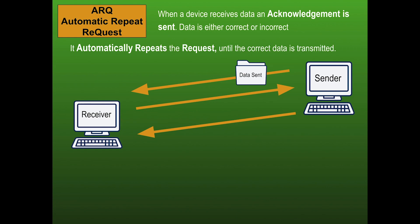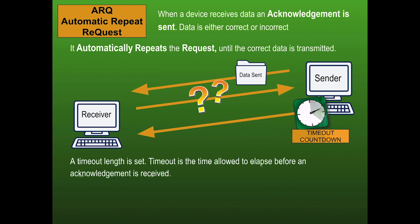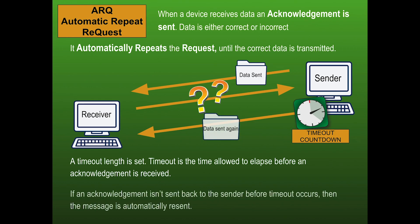What happens if there is no acknowledgement sent back? The sender sends the data but doesn't hear anything back from the receiver. That's when we use a timeout — an agreed upon length of time the sender will wait for an acknowledgement. If the timeout is reached, they send the data again, and keep sending it until they receive an acknowledgement.